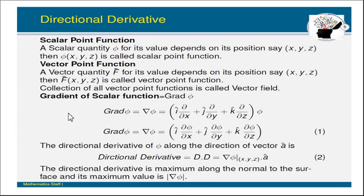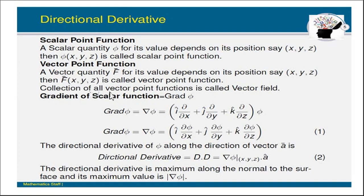Next, the scalar point function: a scalar quantity phi whose value depends on its position (x, y, z) is called a scalar point function. For the vector point function, a vector quantity f-bar whose value depends on its position (x, y, z) is called a vector point function. The collection of all vector point functions is called a vector field.